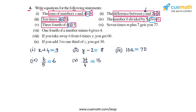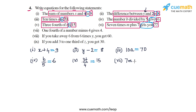In part 6, the statement says 7 times m plus 7 gets you 77. 'Gets you' means equal to 77. So the LHS is 7 times m plus 7 and the RHS is 77. 7 times m plus 7 can be written as 7m plus 7. So you get the LHS as 7m plus 7 and the RHS is 77, and you equate these two. That's your equation for part 6.